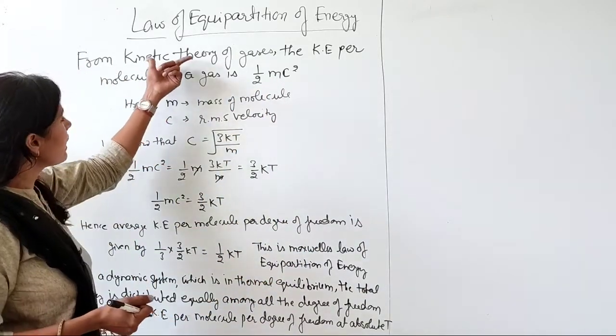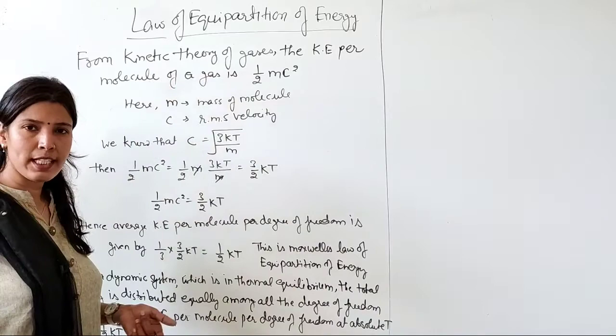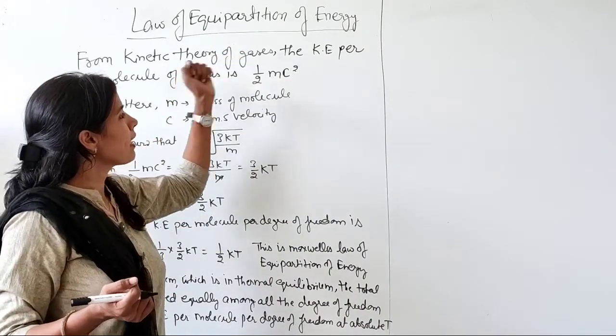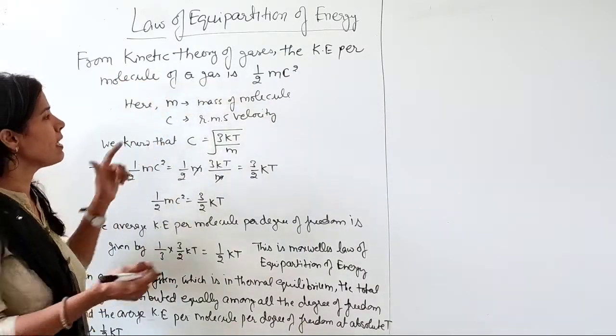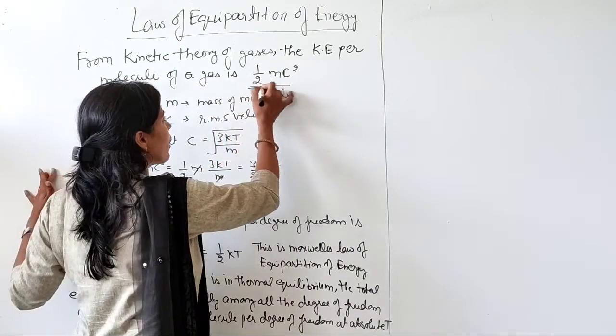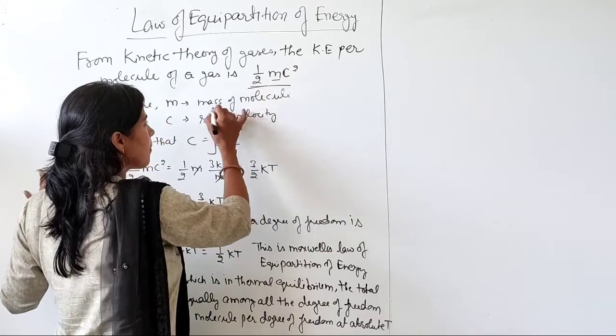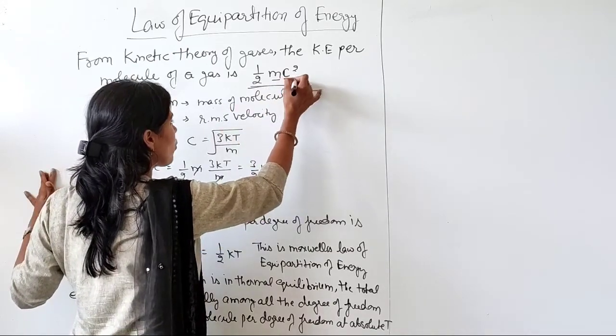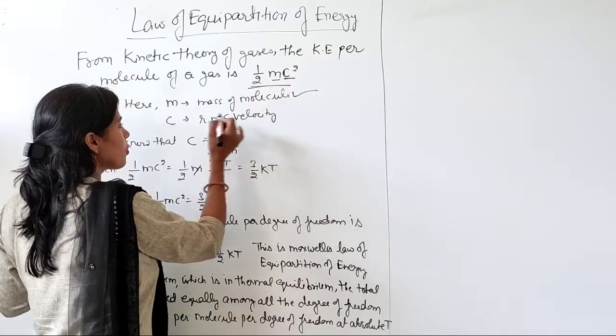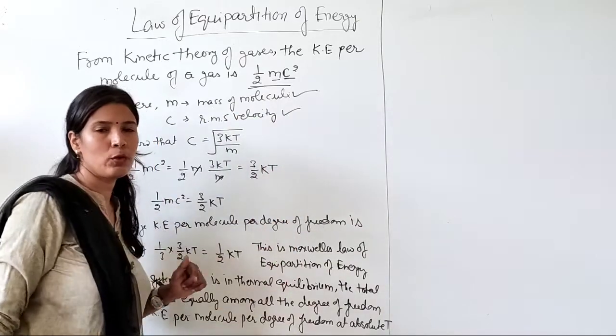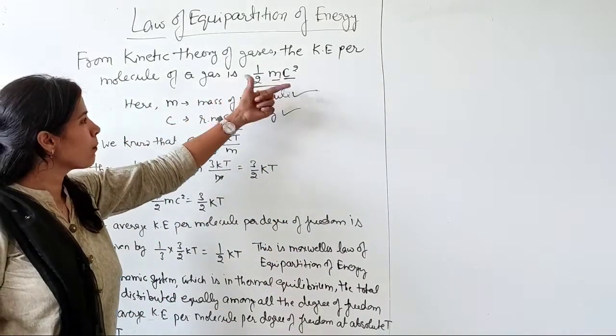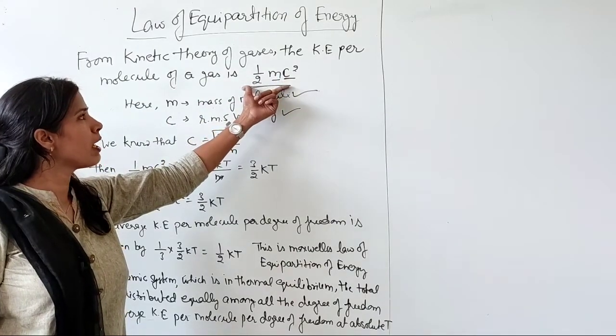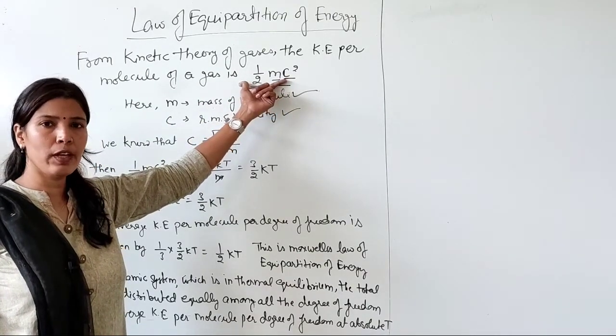Now, from kinetic theory of gases which we studied in previous lectures, the kinetic energy per molecule of a gas is half mc squared. Here, m is the mass of the molecule and c is the root mean square velocity. So if we put root mean square velocity and mass of molecules, we have the formula for kinetic energy per molecule of gas.